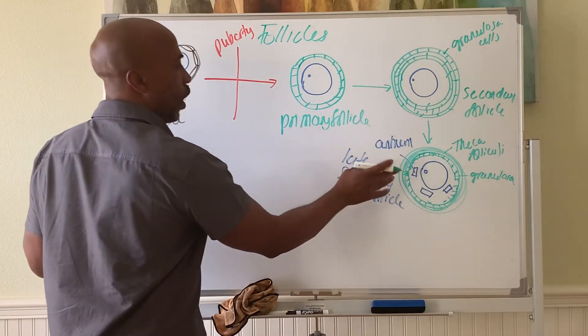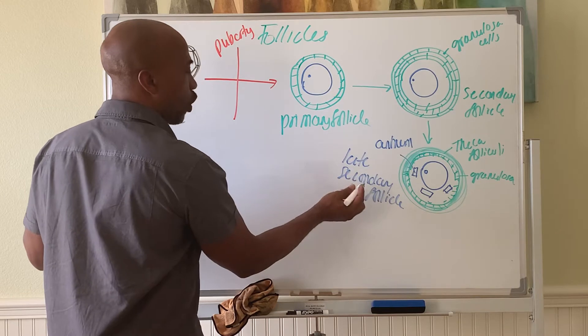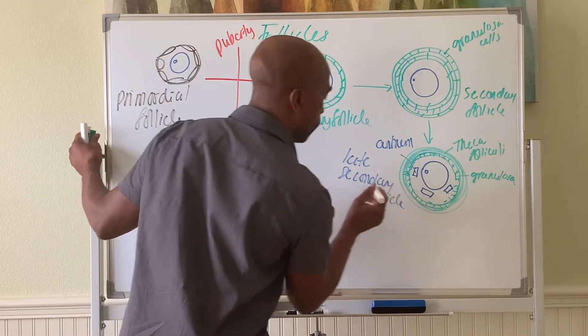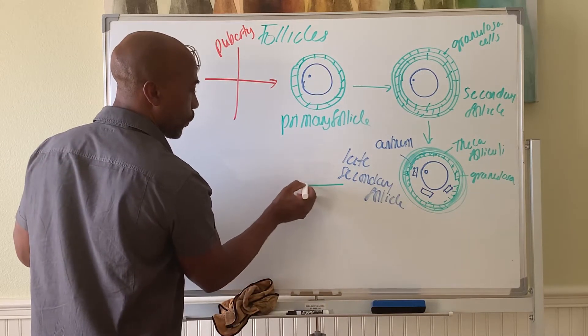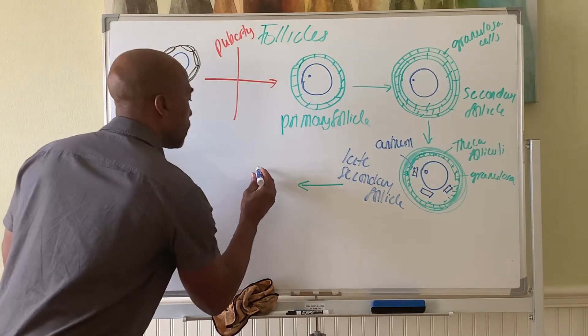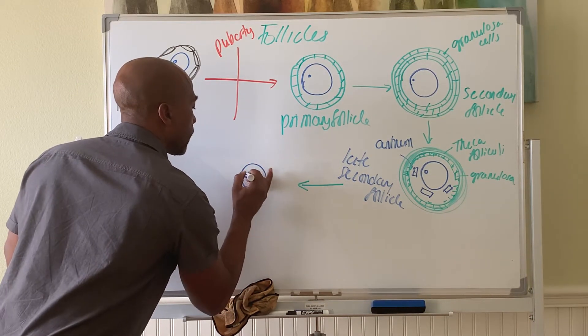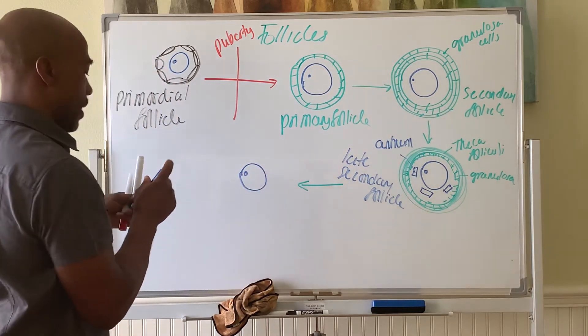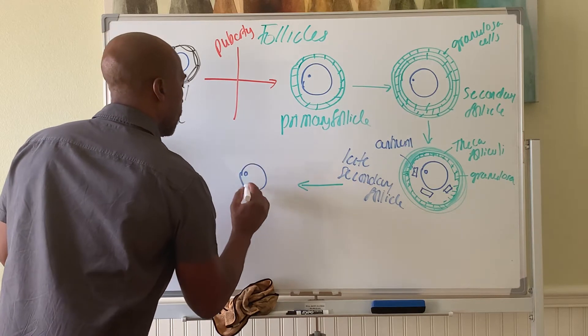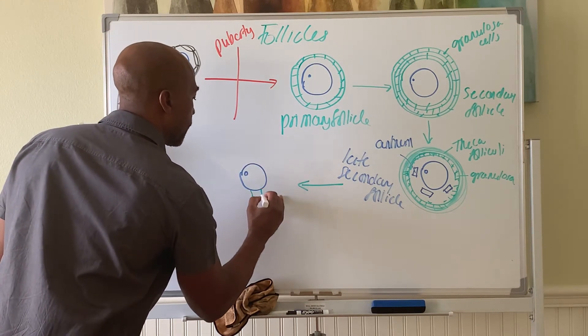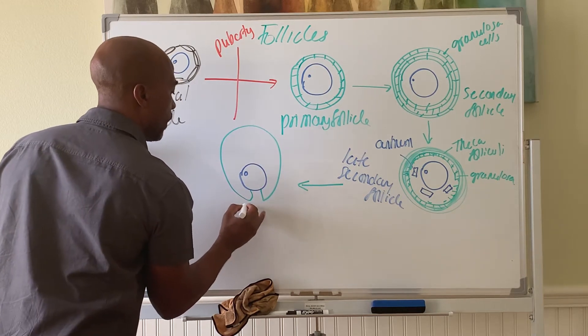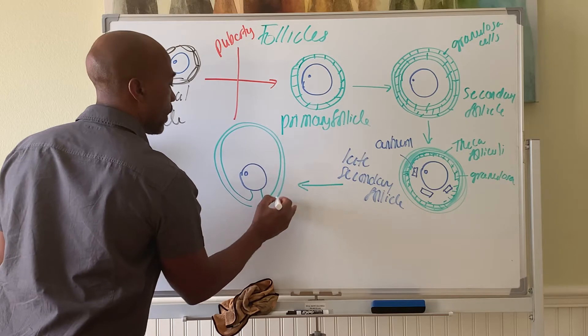But then, once you get to this stage, then the rest of it is done hormonally. The late secondary follicle will form a bigger follicle. Now you have, again, oocyte here. And now the follicle a bit bigger. Still have the theca folliculi out there, pressed out on the end there.